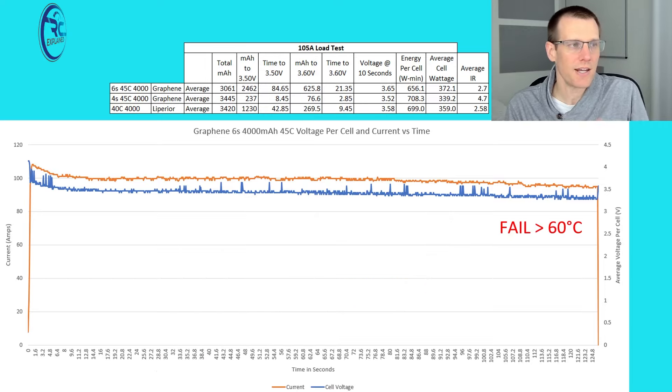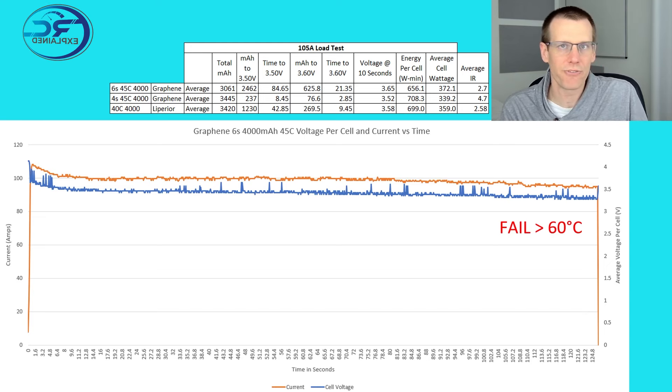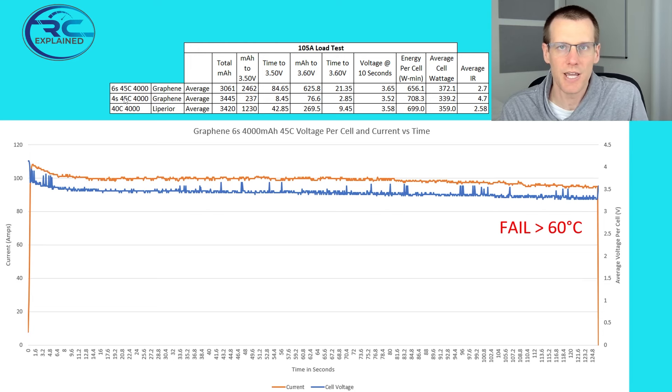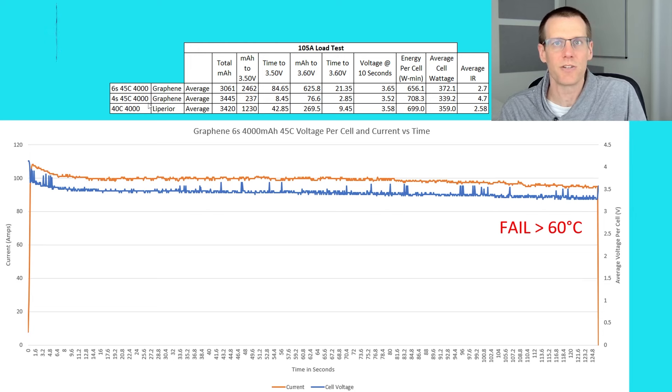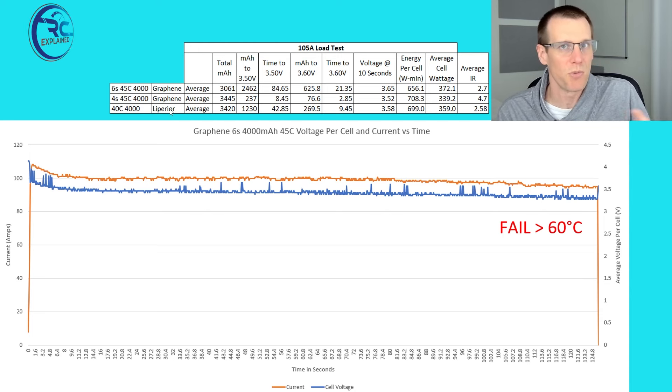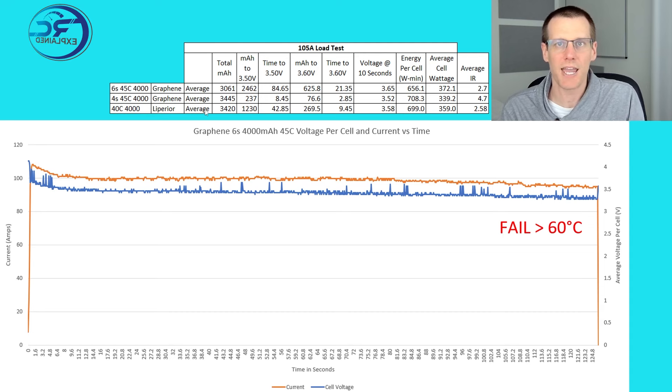We're done the load test and here is the results of that test. Now we have a few different results up on the screen. We have the 6S 45C 4000 that we measured today. And then we have the 4S 4000 that we measured several weeks ago. And then we got the 40C 4000 that we measured even more weeks ago. And we got all the results here that we're going to be taking a look at.